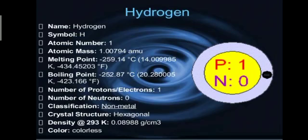This non-metal is hydrogen. Its symbol is H, atomic number is 1, and mass number is also 1. Melting point is minus 259.14 degrees centigrade, boiling point is minus 252.87 degrees centigrade. Number of protons or electrons is 1, number of neutrons is 0. Its classification is non-metal. Its crystal structure is hexagonal and its density at 293 Kelvin is 0.08988 grams per centimeter cube.